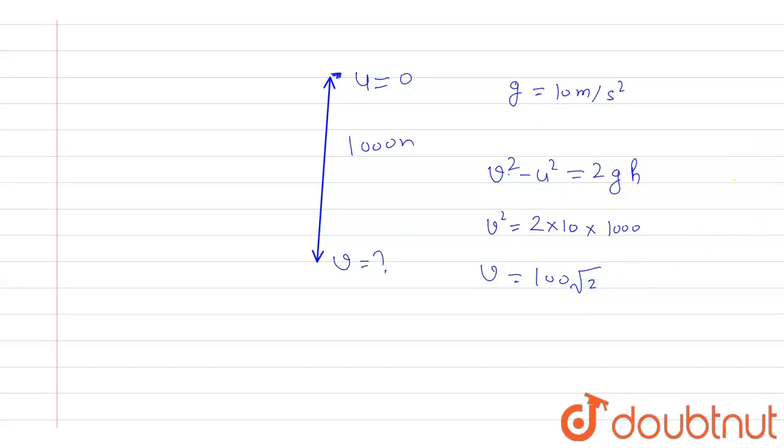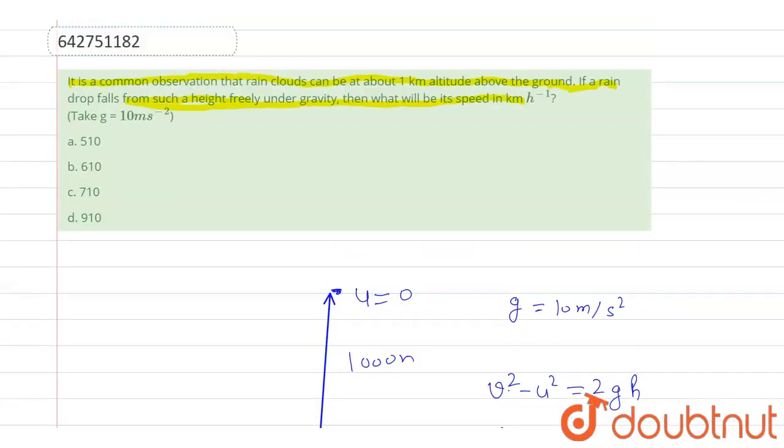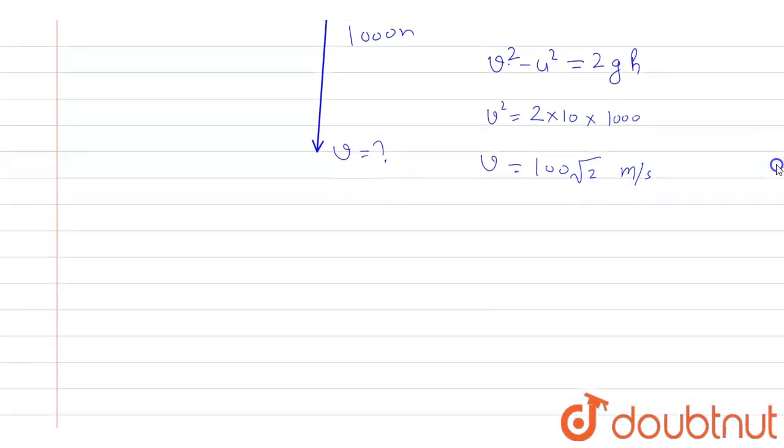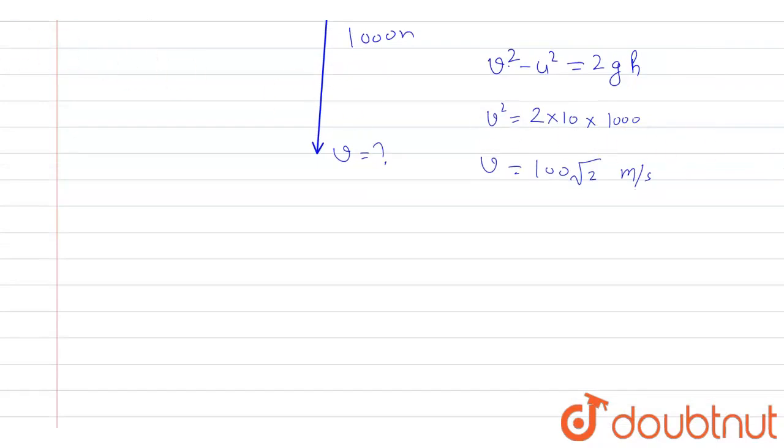So this is the value of v that came out, but this value is in the form of meter per second, while in the question it is asked that we have to calculate the velocity in the form of kilometer per hour. So for that we have to multiply this equation by 18 upon 5.